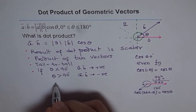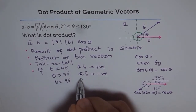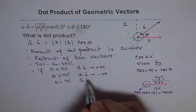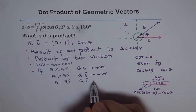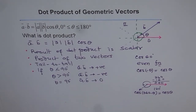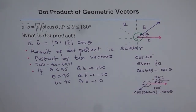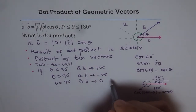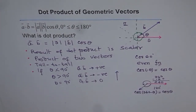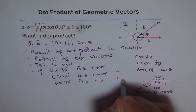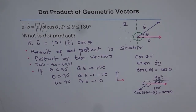If theta equals 90 degrees, whatever A and B may be, cos of 90 is 0, so A dot B equals 0. This means if two vectors are orthogonal — for example, vectors along the x and y axes like basis vectors i and j — their dot product will always be 0, since they are at right angles and cos 90 is 0. This is a very important result.